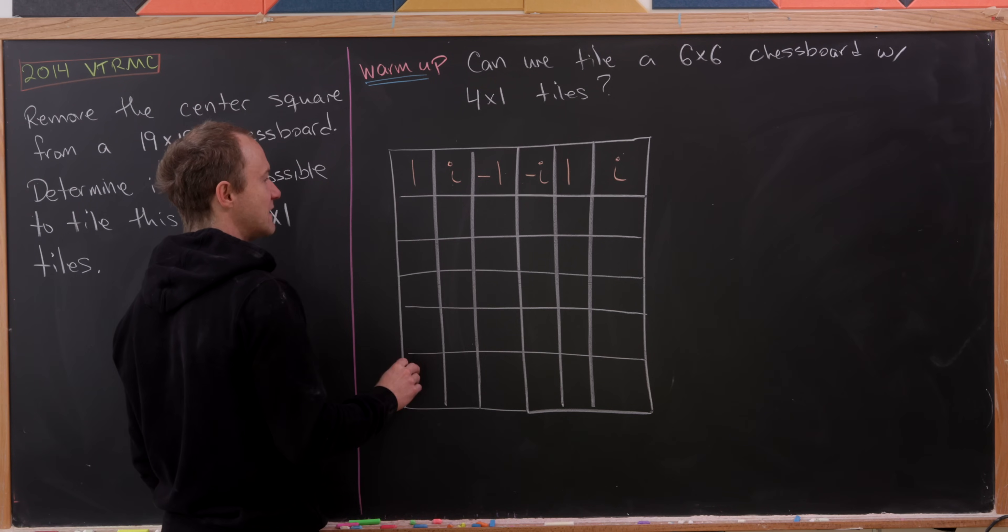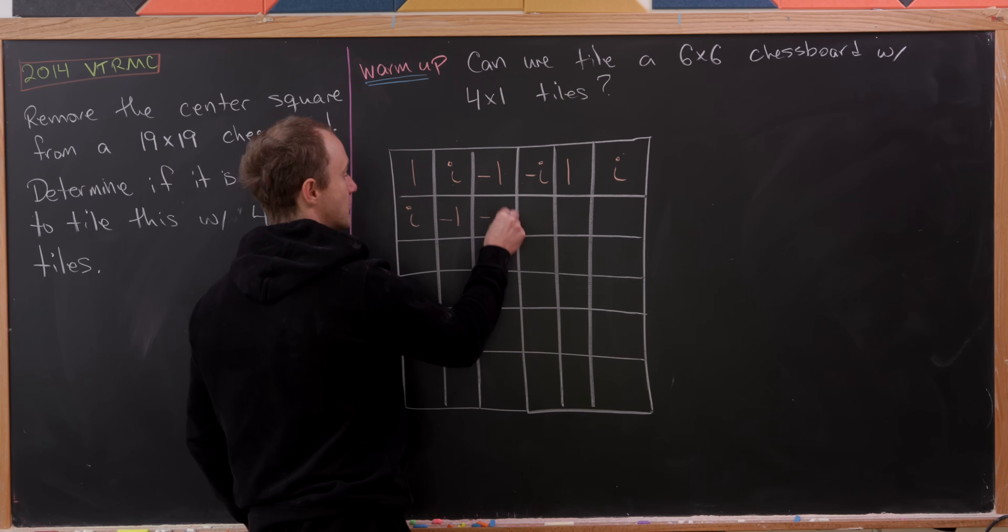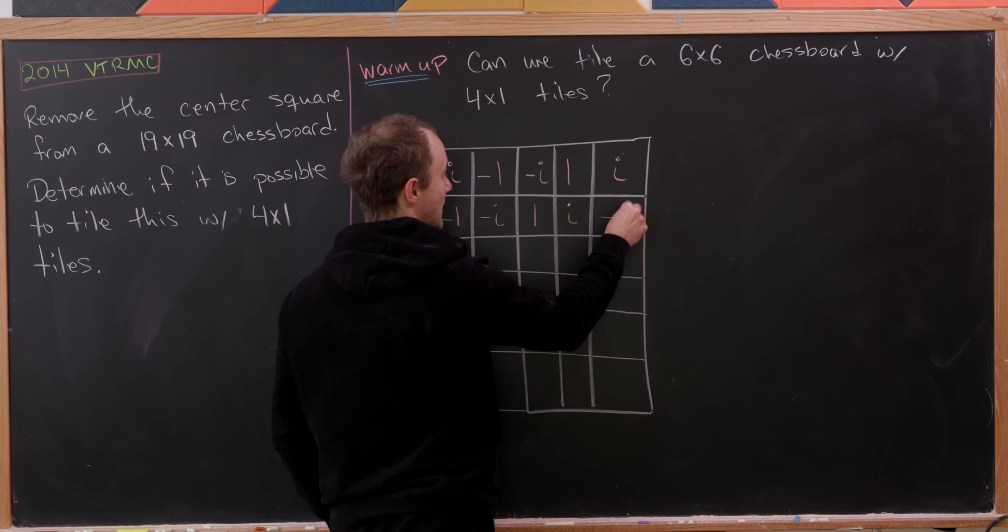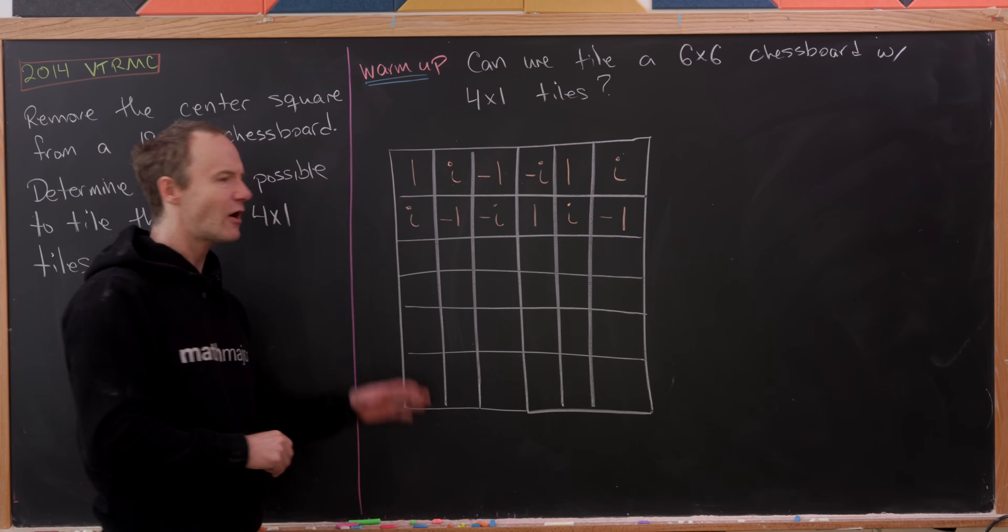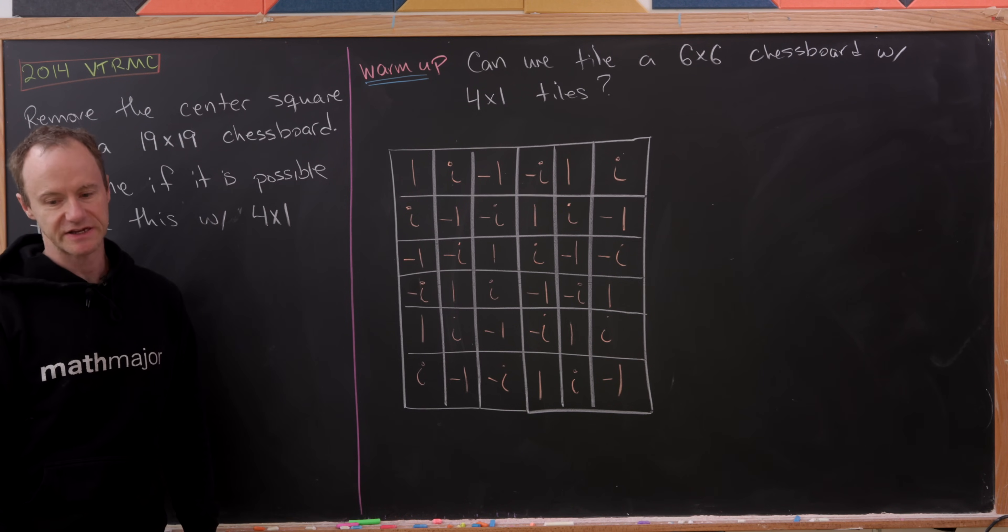And then we're going to complete the square using this strategy. So here we have i, minus 1, minus i, 1, i, minus 1. And now let's just get it completed. So there we've got our completed chessboard.